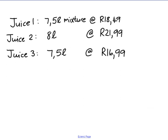From the previous question where you had to dilute the concentrate, we worked out that the total amount of mixture was 7.5 liters. And if you go back to your price list, you would have seen that 7.5 liters — juice one — cost $18.49.